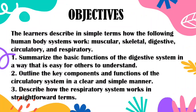Day 4. Objectives: The learner described in simple terms how the following human body systems work — muscular, skeletal, digestive, circulatory, and respiratory. Number one, summarize the basic functions of the digestive system in a way that is easy for others to understand. Number two, outline the key components and functions of the circulatory system in a clear and simple manner. And number three, describe how the respiratory system works in straightforward terms.